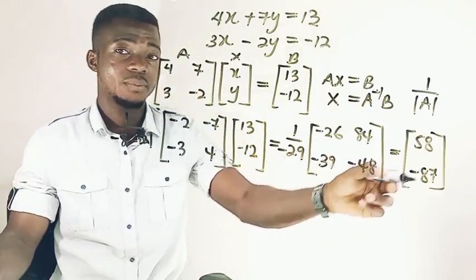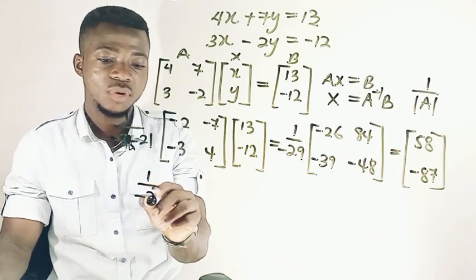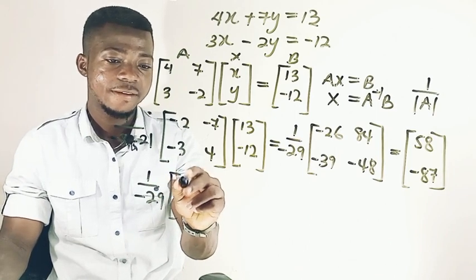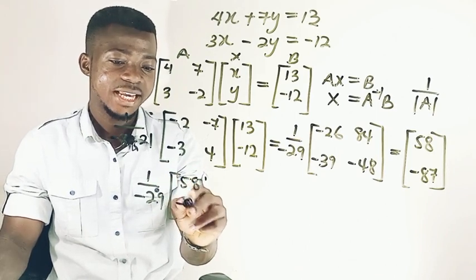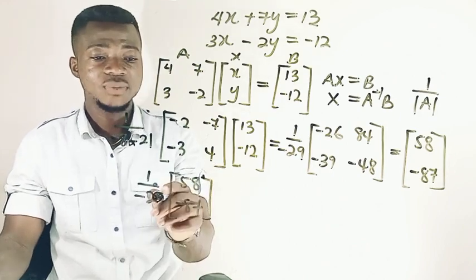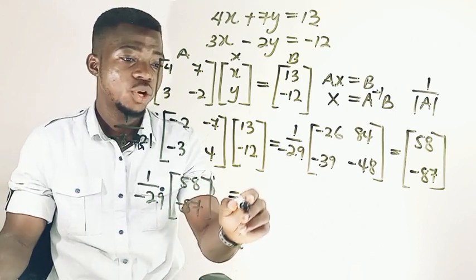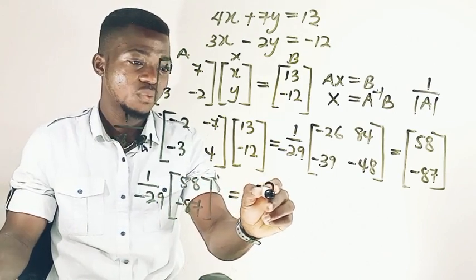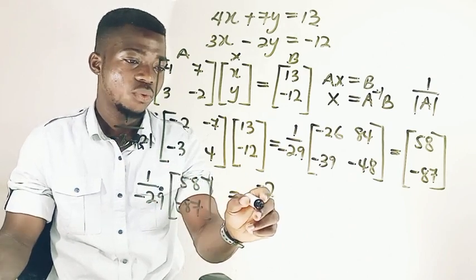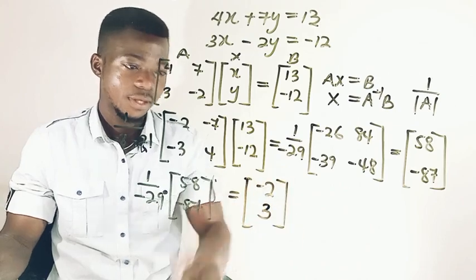So now we go to multiply this one by that. We have 1 over negative 29 times 58, negative 87. So now this one times that, we're going to be left with negative 2. And then this one times that, we'll be left with 3.